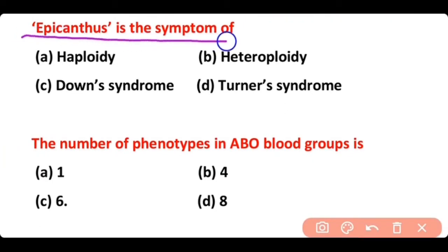Epicanthus is the symptom of: haploidy, heteroploidy, Down syndrome, or Turner syndrome. The correct answer is option C. Epicanthus is the symptom of Down syndrome.